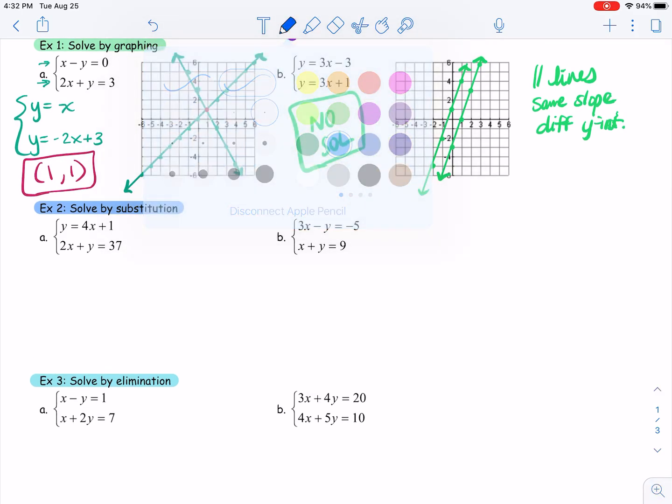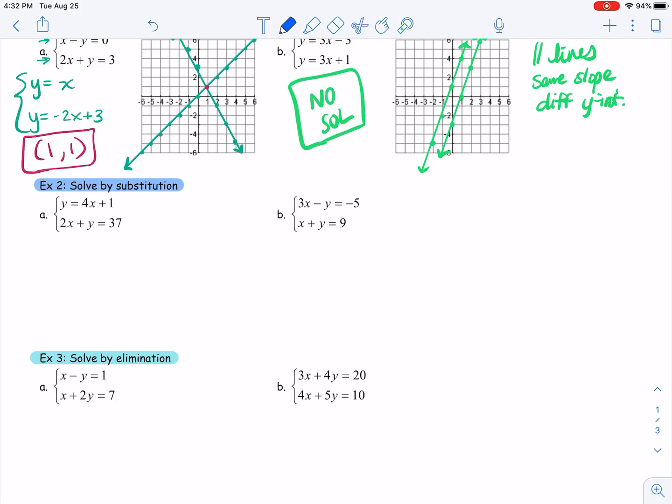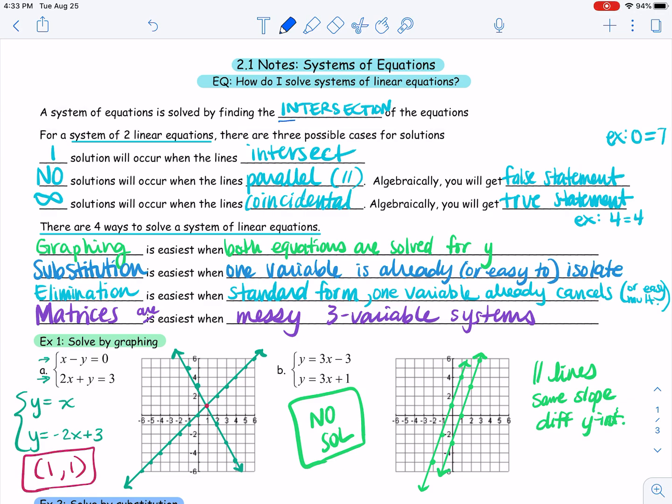Going into substitution. Remember, substitution, we said, was easiest when you have a variable already isolated. So you can just simply plug it into the other. Remember, substitution is plugging it in. What I see in example A is that my first equation is already solved for y. The variable y is isolated. So that means I could take all of this, what y is equal to, and plug it into the y of the second equation, getting 2x plus 4x plus 1 equals 37. And now I can solve this equation for x. Once I get that value of x, I can plug it into either equation and solve for my variable of y, and that will give me my solution, the x value and the y value. Remember, solutions to systems is where the lines intersect. So that intersection point is some x comma y. It is an ordered pair.